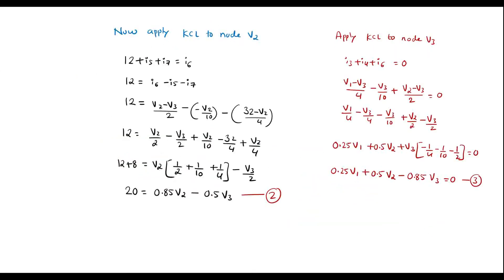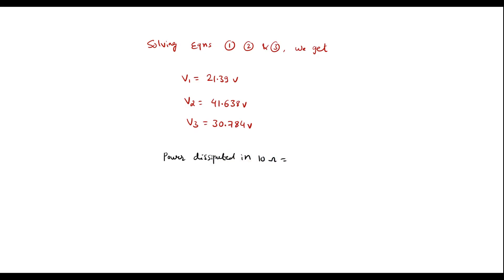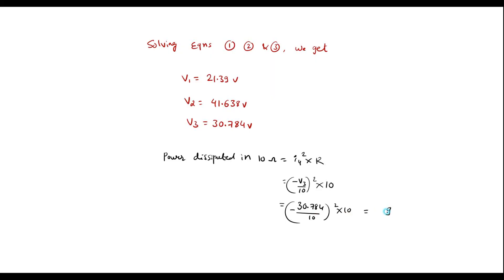Therefore, we find the power dissipated in the 10 ohm resistor. The current through the 10 ohm resistor is I4 = -V3/10. Power = I4² × R = (V3/10)² × 10 = (30.784/10)² × 10, which gives 94.74 watts. This is the required result.